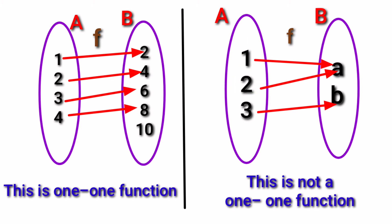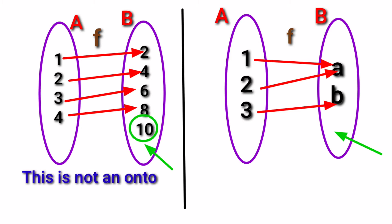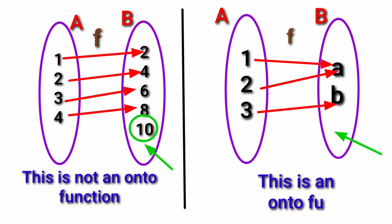To be a one-one function, for every element in A there should be a different image in B. Now let us see what is an onto function. To check whether it is an onto function, first we want to see the second set B, that is the co-domain. In the first example, the element 10 in B has no pre-image in A, so we can say that this is not an onto function. In the second example, if we see the co-domain B, the elements A and B have pre-images in A, so we can say that this is an onto function.